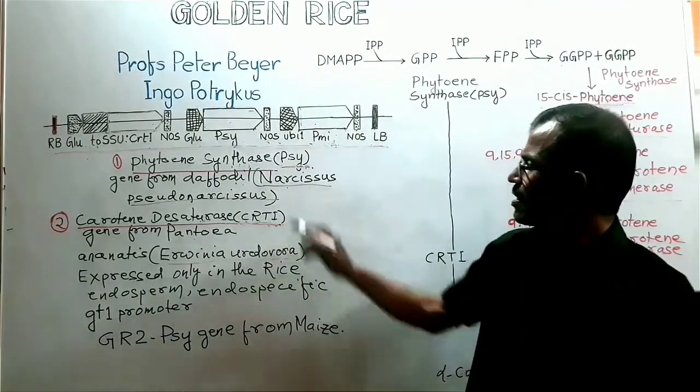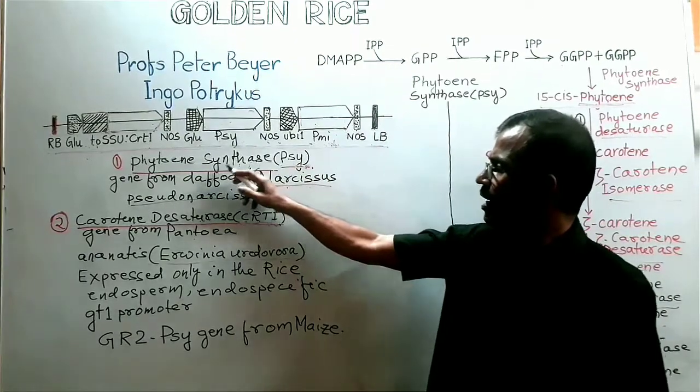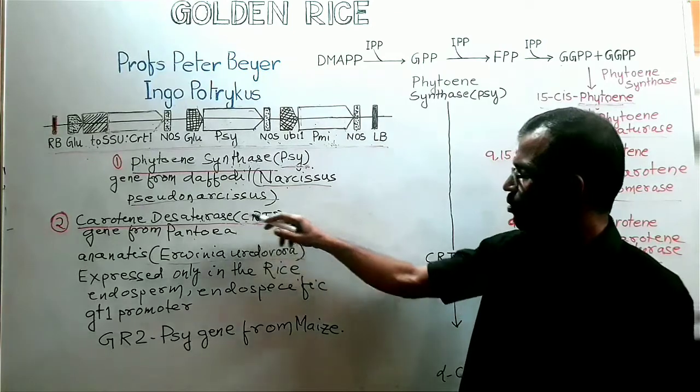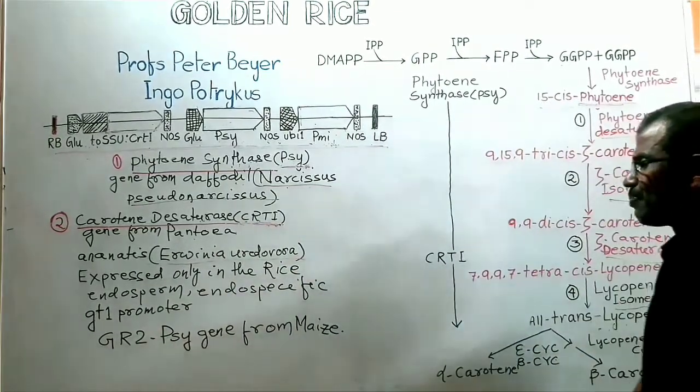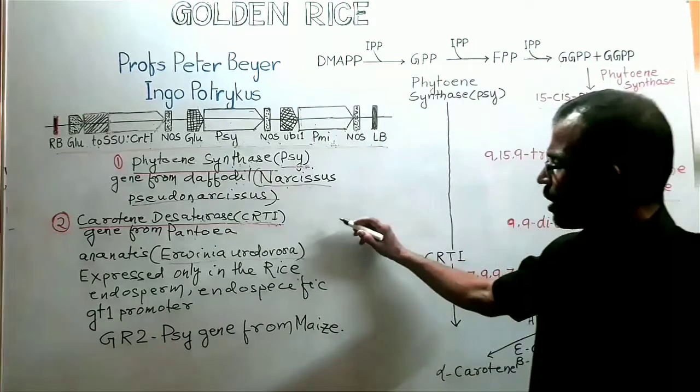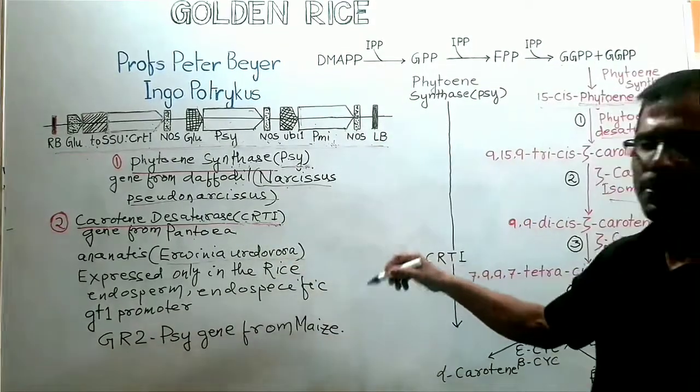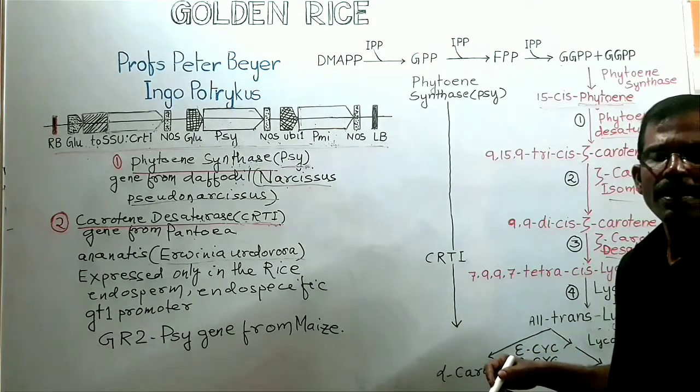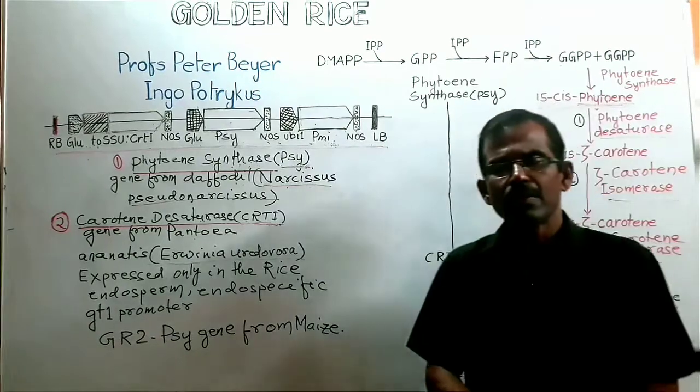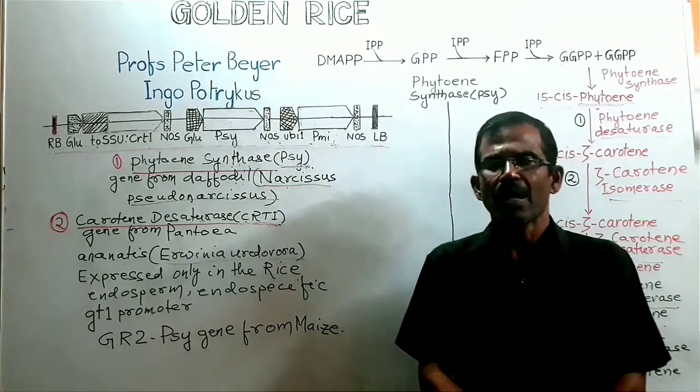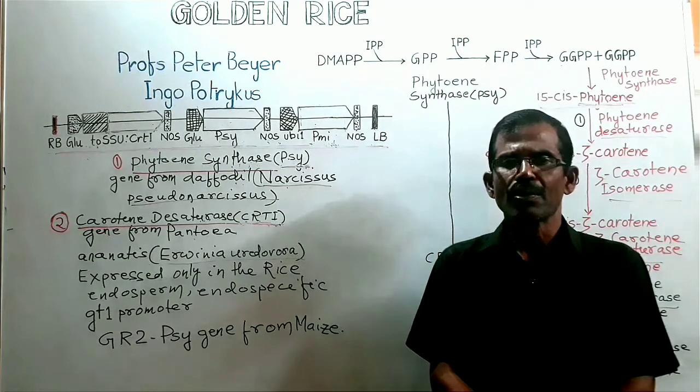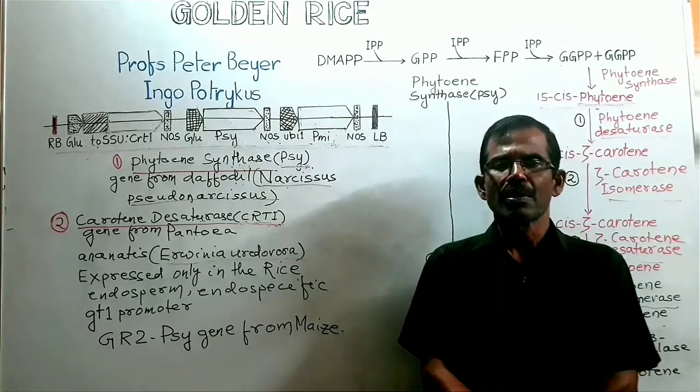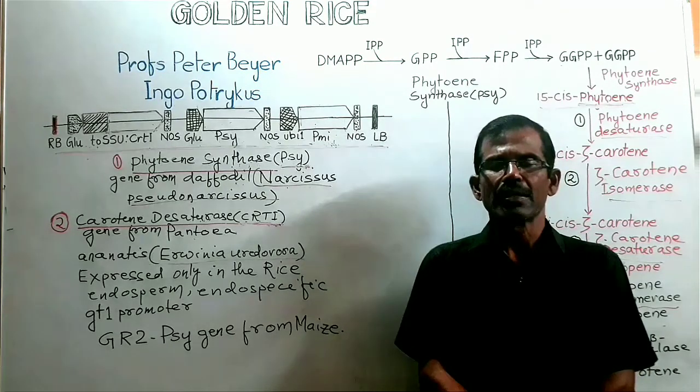One transgene is PSY gene that codes for the enzyme phytoene synthase. Another gene is CRTI gene that codes for the enzyme carotene desaturase. So by employing CRTI gene, the number of transgenes required has been reduced to only two. And compared to golden rice 1, golden rice 2 produces higher level of beta-carotene in its grain. So in future, golden rice is having the potential to fight vitamin A deficiency.